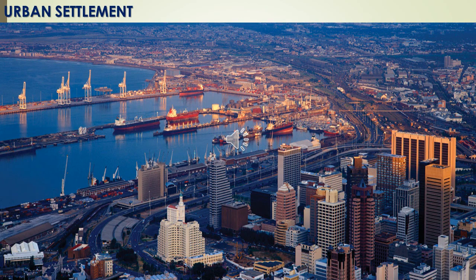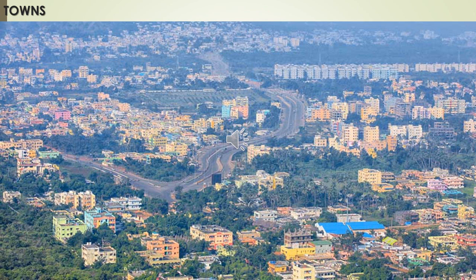Urban settlements are settlements in which most people are involved in secondary and tertiary activities — they do not involve in primary activities like agriculture. Towns, cities, and large city areas are referred to as urban areas. The definition of urban area varies from one country to another. Some common bases of classification are: size of population, occupational structure, and administration.